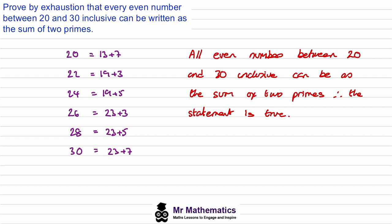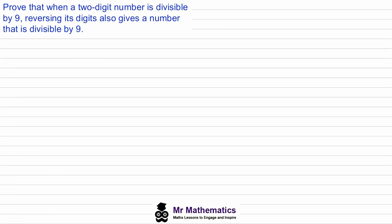Finally, we've been asked to prove that when a two-digit number is divisible by 9, reversing its digits also gives a number that is divisible by 9.